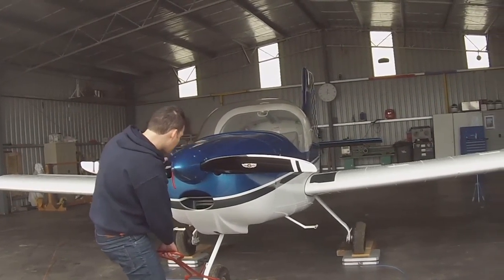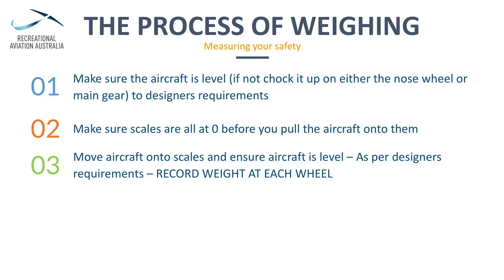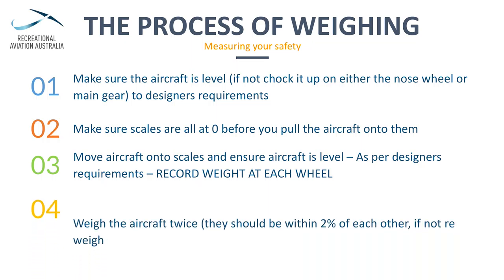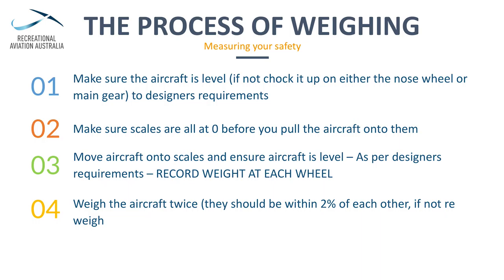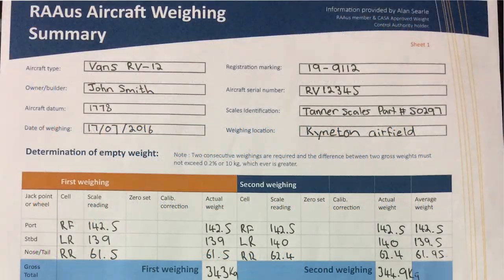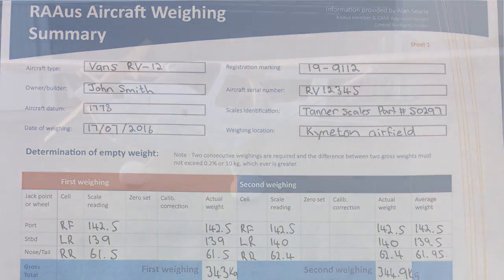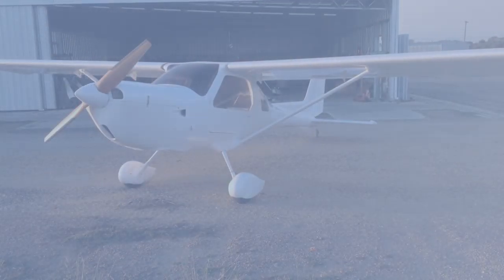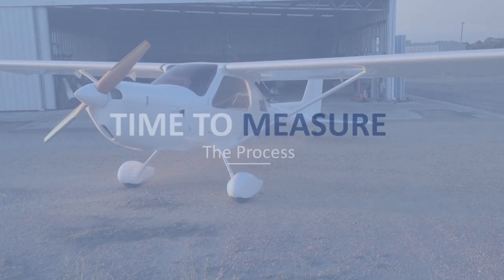Record the weights at each wheel. Pull the aircraft off and repeat this process. The weights must be within 2% — if not, start from the beginning and re-weigh. Take the average of the readings and record them on the aircraft weighing summary. Before we start to measure, let's look at a diagram of the aircraft to be measured in order to establish the points we are going to record.